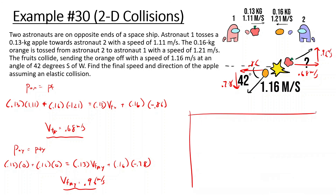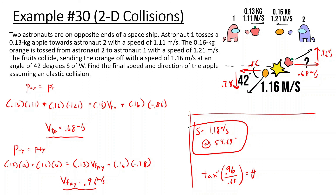Using the Pythagorean theorem: the square root of 0.96 squared plus 0.68 squared gives 1.18 m/s for the apple. For the direction: tan inverse of 0.96 divided by 0.68 gives 54.69 degrees. That's the speed and direction of the apple after the collision. Thanks for watching, I hope you learned a lot about momentum and impulse. See you next time — either with electricity or angular motion.